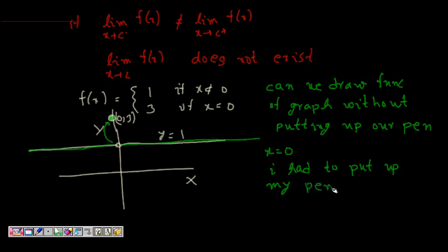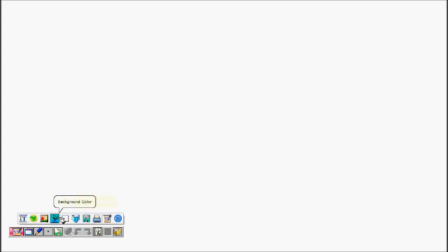This tells us that the function is not continuous at x equals 0. So based on these two examples, we can now define what continuity means in terms of limits.